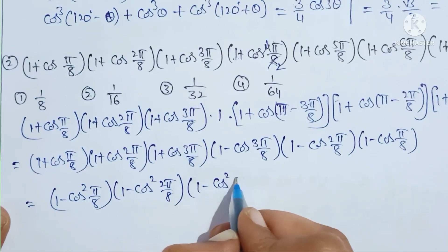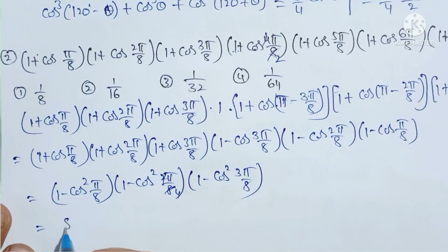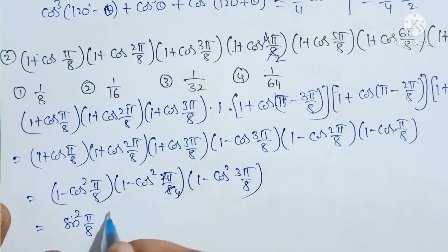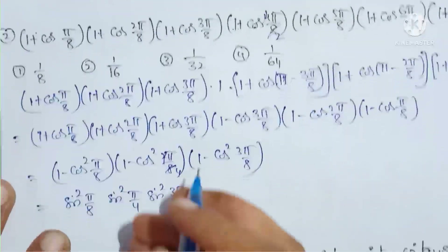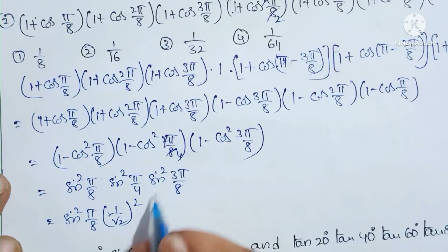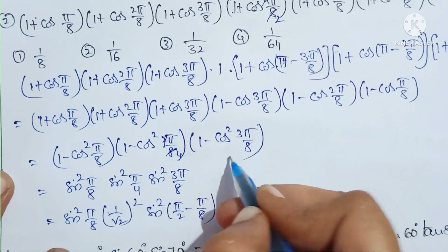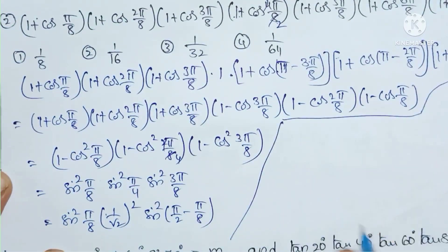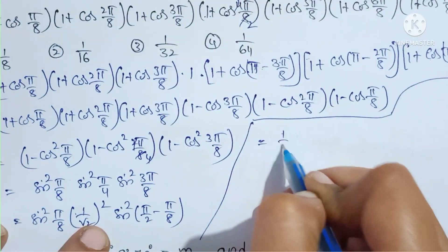So we have (1 - cos²(π/8)) × (1 - cos²(3π/8)) × 1 (from the middle term). These equal sin²(π/8) × sin²(3π/8). Now sin(3π/8) = sin(π/2 - π/8) = cos(π/8), and cos(π/2) gives (1/√2)², so sin²(2π/8) = sin²(π/4) = 1/2.